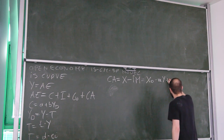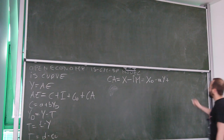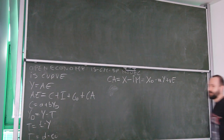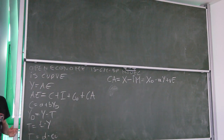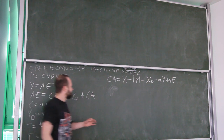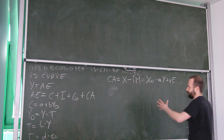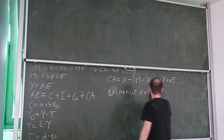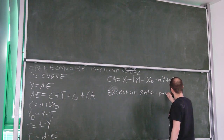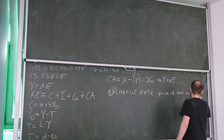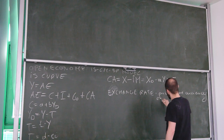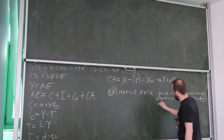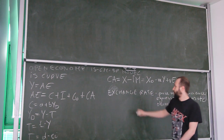Our current account function we will rewrite like this: it will be autonomous exports minus the marginal propensity to import times income. To what we already had, we are going to introduce a new variable into the model — exchange rate. So we will have v times the exchange rate.